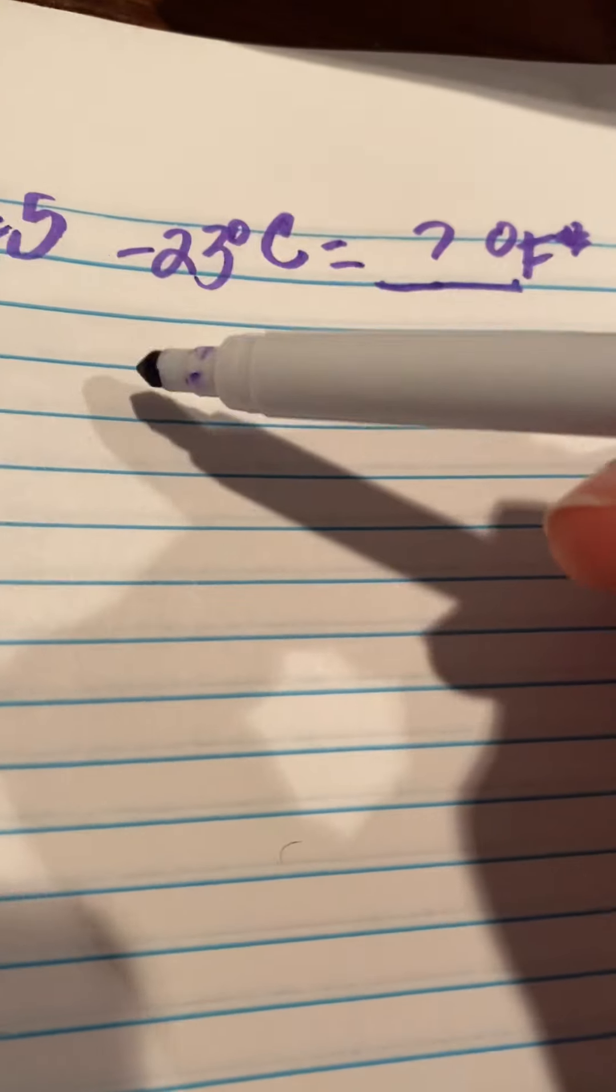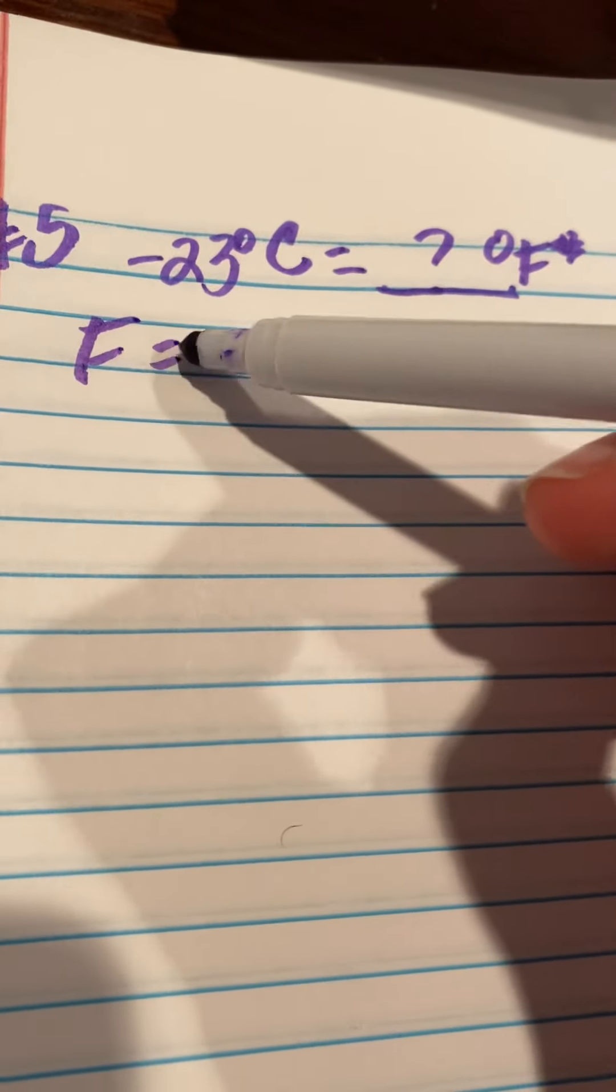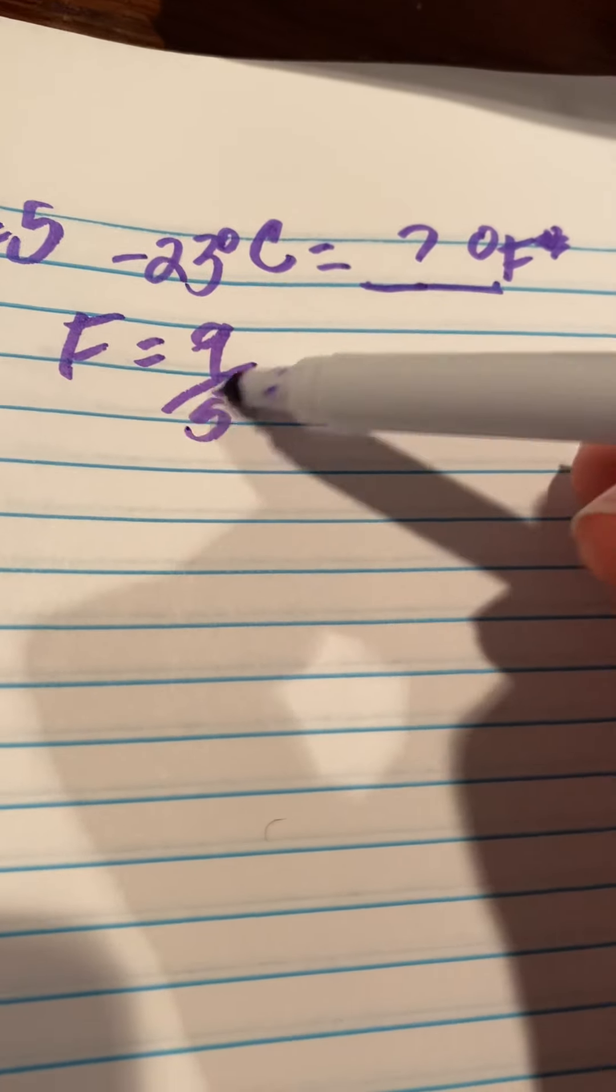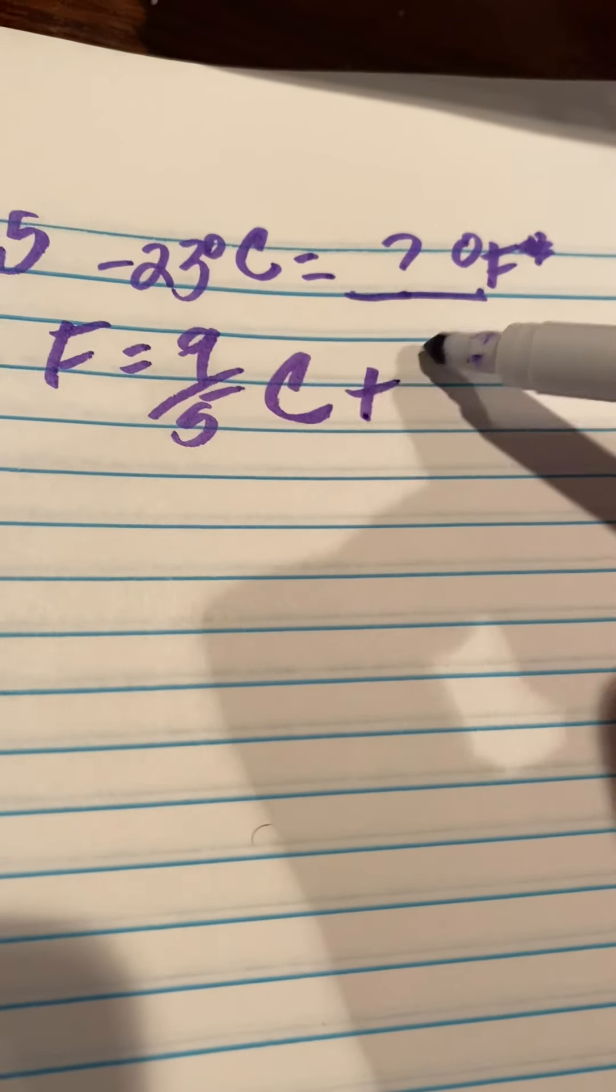All right, guys, I was asked about number five on our homework today. So number five asks us, negative 23 degrees Celsius is equal to what Fahrenheit? Degrees is over here. What Fahrenheit? So we once again use that formula, F is equal to 9 fifths C plus 32.